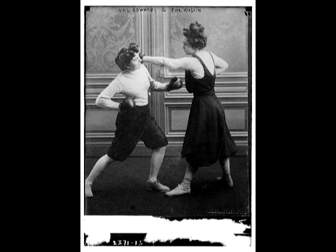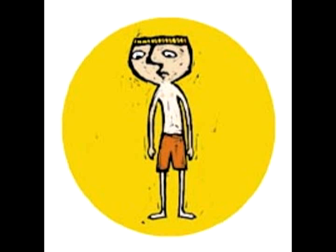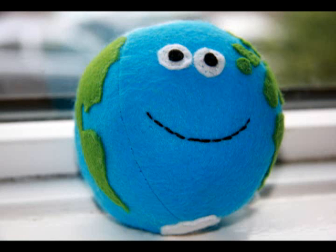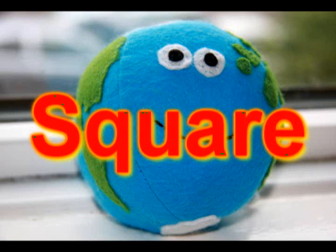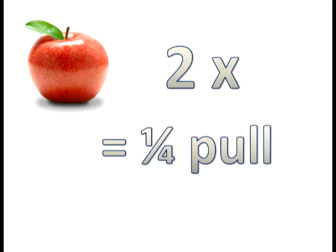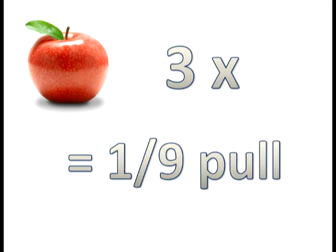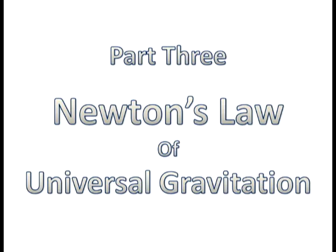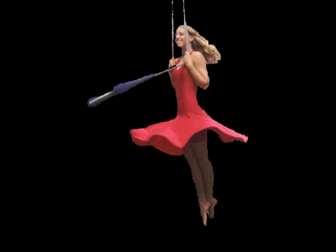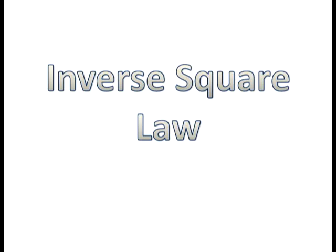The inverse square law goes like this: an apple two times as far away from Earth would feel one-fourth the pull, and an apple three times away would feel one-ninth the pull. And now we're at the big show — Isaac Newton's Law of Universal Gravitation. So we've got centrifugal force with Isaac Newton spinning his girlfriends on ropes, and we've got the inverse square law about the Earth's pull getting lighter as we move away.